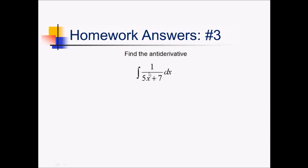On this problem, taking this antiderivative, this is essentially a 1 over x kind of situation — it's a constant over something linear. So we can use ln to take the antiderivative, but we can't just write ln of absolute value of 5x plus 7, plus c. That's pretty close to the answer, but since the stuff inside the ln here is a linear function, we have to divide by the derivative of this — divide by 5 — so we're actually going to end up with one-fifth ln of absolute value of the denominator, plus c.